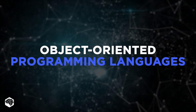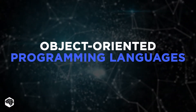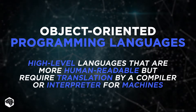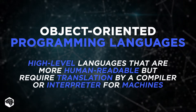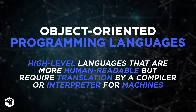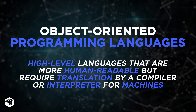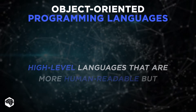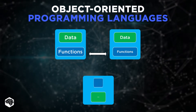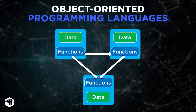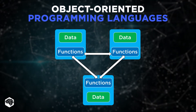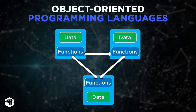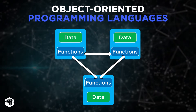Object-oriented languages are high-level languages that are more human readable, but require translation by a compiler or interpreter for machines. They can go further and combine their data and procedures into units named objects, which comprise more than just functions.